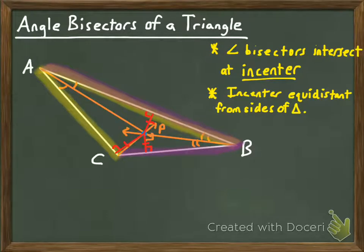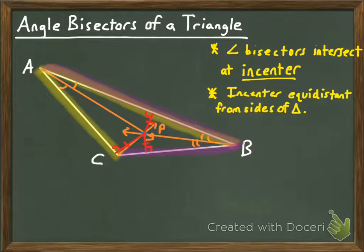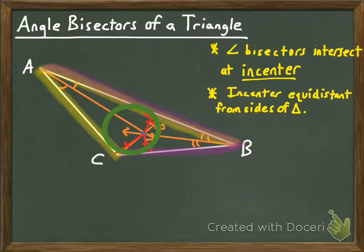The last cool thing I want to show you is that just like the circumcenter, the incenter happens to be the center of a special circle related to a triangle. However, unlike the circumcenter — which was equidistant from the vertices and thus was the center of a circle that circumscribes a triangle — the incenter is the center of a circle that you can inscribe within a triangle, where the circle will touch each of the sides exactly one time. The incenter is equidistant from the three sides of the triangle.